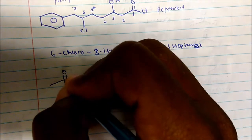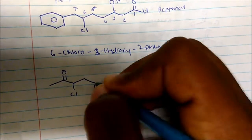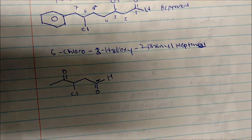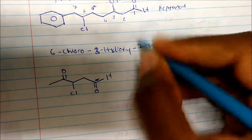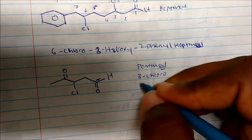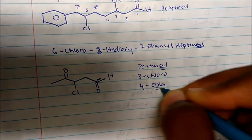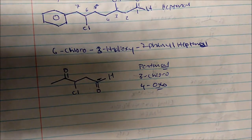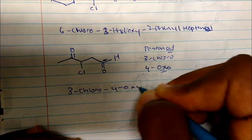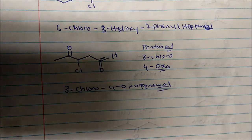For this last compound, in terms of nomenclature order, an aldehyde is ranked above a ketone, so the parent chain is with respect to the aldehyde. Counting from the aldehyde: 1, 2, 3, 4, 5 — so the parent chain is pentanal. On carbon 3 I see a chlorine, so that's 3-chloro. On carbon 4, a carbonyl as a substituent is called oxo, so that's 4-oxo. In alphabetical order: 3-chloro-4-oxopentanal. Pretty much nothing difficult.